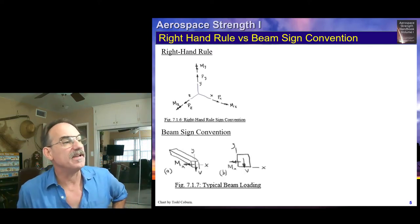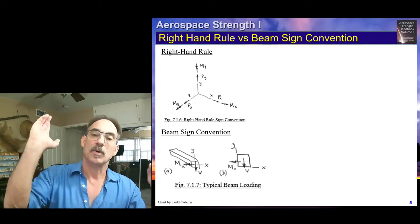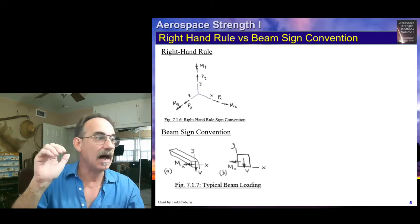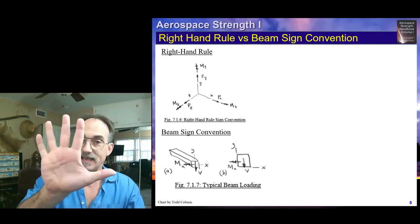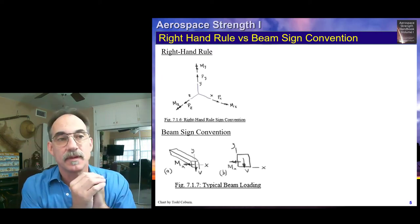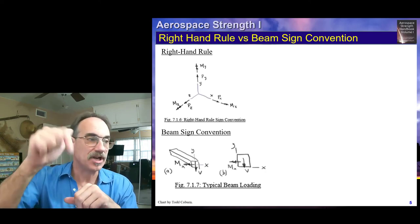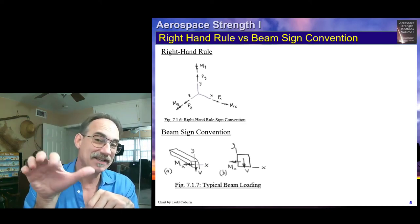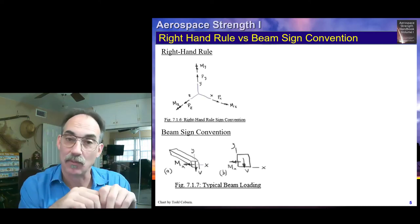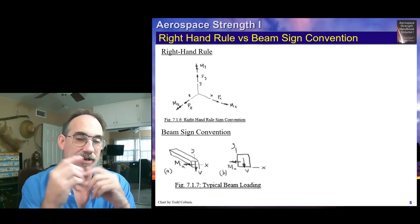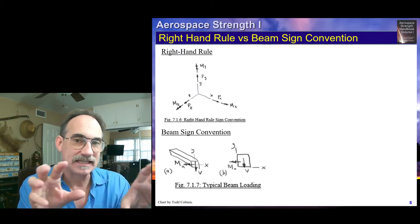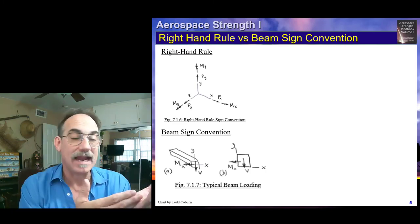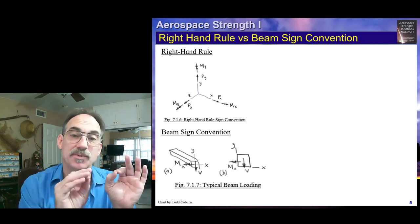Looking at beam sign convention further: positive shear chops off the beam moving from left to right, and positive moment is smiley face bending inducing compression on the top. Notice that positive shear in beam sign convention is going in the negative y direction, and the positive moment for beam sign convention is actually negative for right-hand rule. You need to be alert to which sign convention is being used. In this section, whenever dealing with beams it's traditional to use beam sign convention, but you need to be fluent in both right-hand rule and beam sign convention.